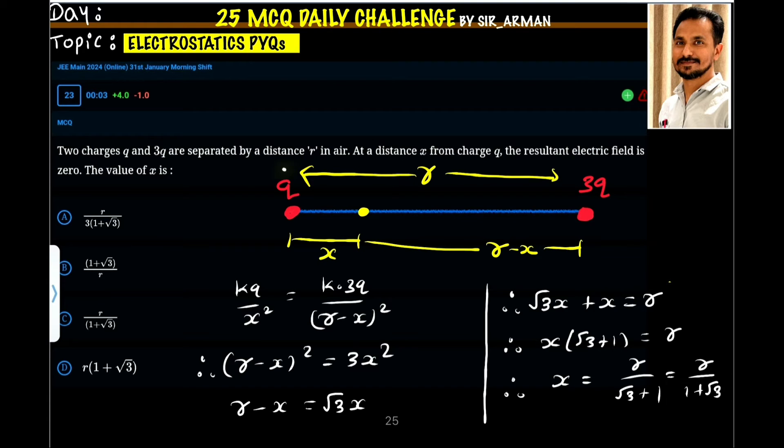The electric field due to this charge is KQ by X square, and due to this charge is K3Q by R minus X square, because the distance between two charges is R. So this distance becomes R minus X.